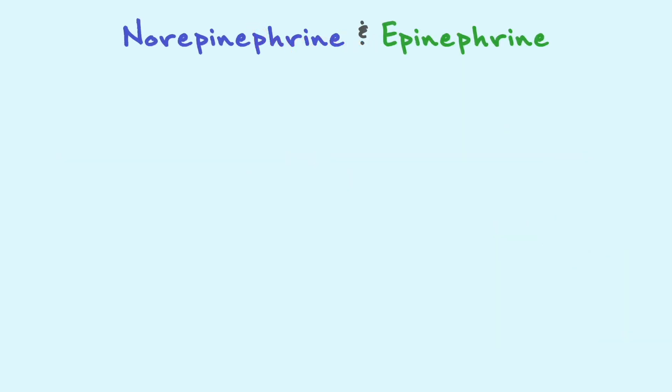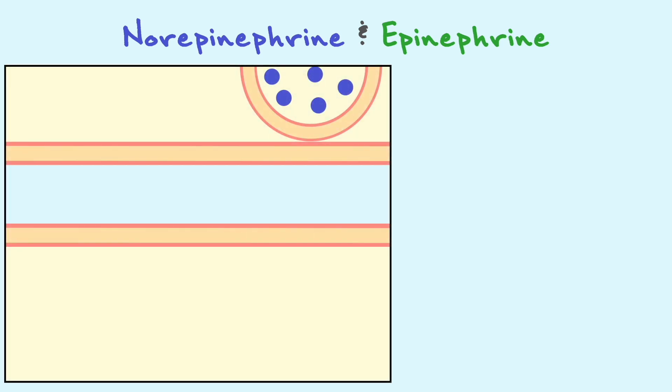When it comes to norepinephrine and epinephrine, the two neurotransmitters also bind only to metabotropic receptors. There are two main types of these metabotropic receptors, and they are called alpha and beta adrenergic receptors. Norepinephrine and epinephrine can both bind to these receptors, so don't take the colors of these receptors as norepinephrine binds to alpha and epinephrine binds to beta. The two neurotransmitters can bind to both.